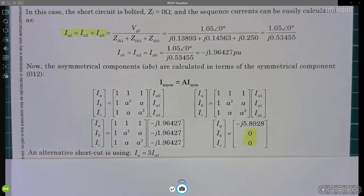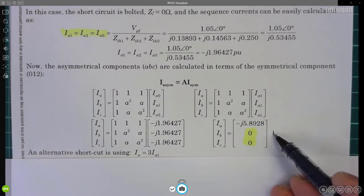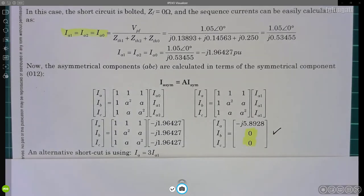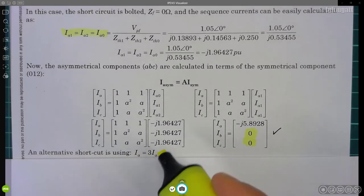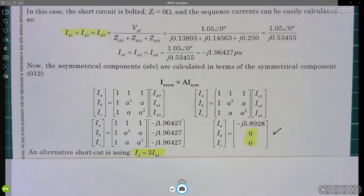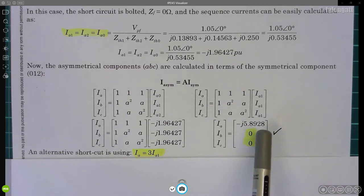Many students don't like using matrix A because it seems overcomplicated, but for me it's the best method, because if you do everything right you can demonstrate that IB and IC are zero, which verifies your answer. Some students prefer the shortcut where the current on line A equals three times the positive sequence current, but I don't recommend going straight to that shortcut, because you won't be able to demonstrate the zero-current check and you may make mistakes.